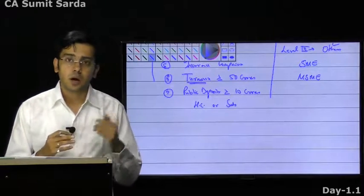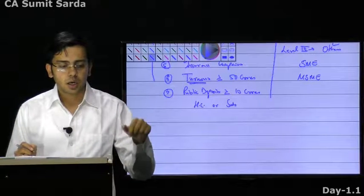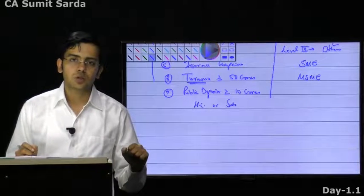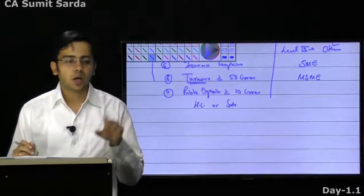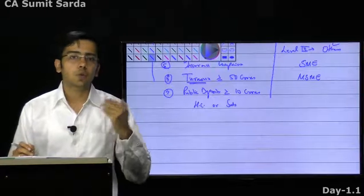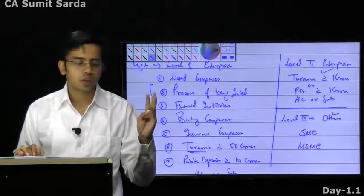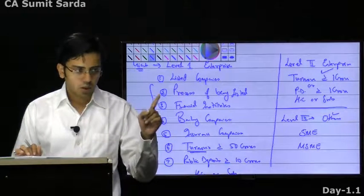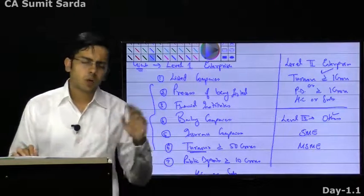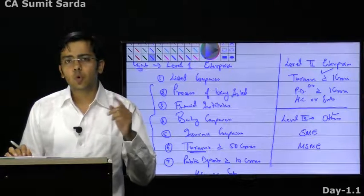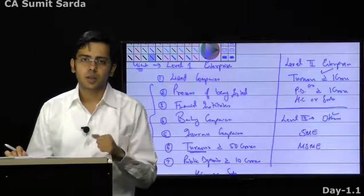NAKAS has built Companies Accounting Standard Rules 2006, which approved the standards to be followed by companies. The standards cannot be followed randomly by every company or other than company, so we have split them into three parts: Level 1, Level 2, Level 3. Level 1 enterprises are those listed or in the process of listing, financial institutes, banks, or insurance companies, with turnover more than 50 crore, deposits more than 10 crore, or who are holding or subsidiary.